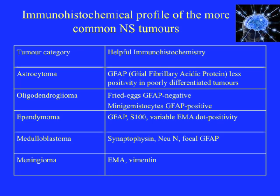This table shows the useful immunohistochemistry we use to classify the more common nervous system tumours. Astrocytic tumours tend to be GFAP positive — GFAP stands for glial fibrillary acidic protein — however there is less positivity in higher grade or poorly differentiated tumours. Oligodendroglial tumours have a mixed population: the typical fried egg tumour cells are GFAP negative, but some tumours have mini gemistocytes which are GFAP positive. At present we don't have a routine marker for oligodendroglial lineage. Ependymomas are positive for GFAP, S100, and sometimes show variable dot positivity for epithelial membrane antigen, or EMA.